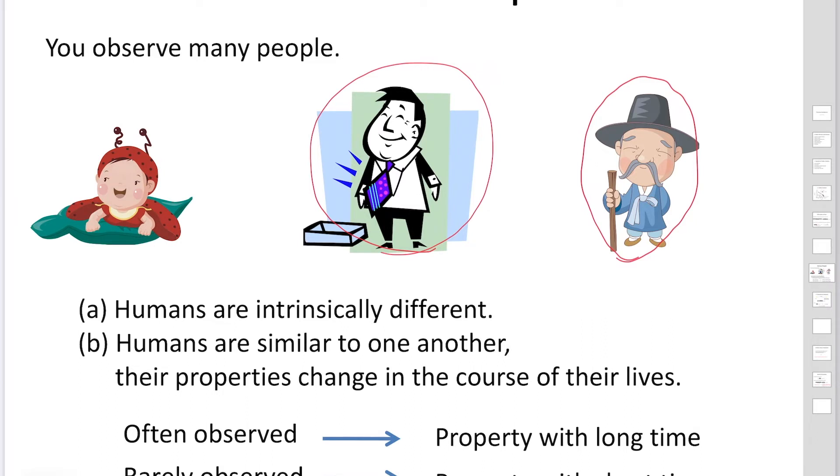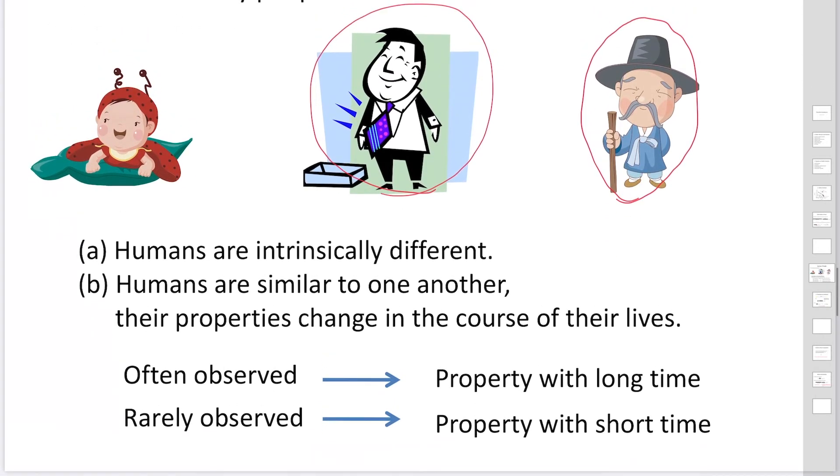Once you observe a number of people, if you think you are visitors from another planet and observe people in a very short time period like 90 seconds, how could you understand human beings on earth? There are two interpretations. First is that humans are intrinsically different.